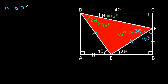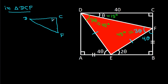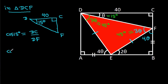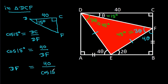Now in triangle DCF, this angle is 90 degrees, this angle is 15 degrees, and DC is 40. So cos 15 degrees equals DC over DF, giving cos 15 degrees equals 40 over DF, so DF equals 40 over cos 15 degrees.